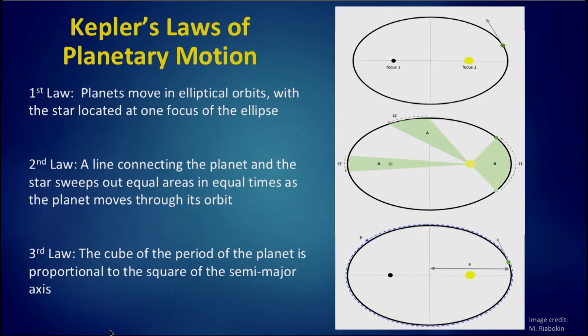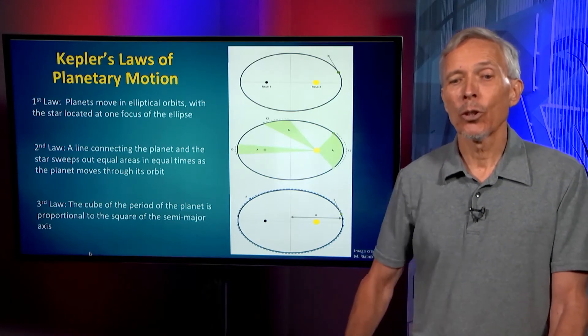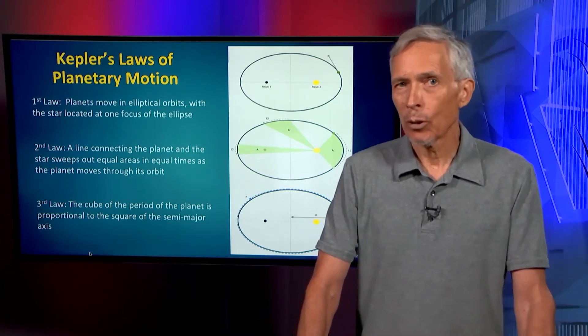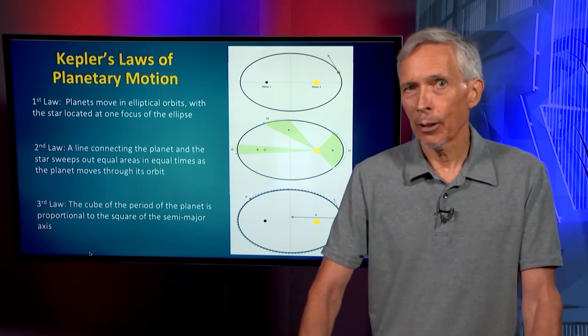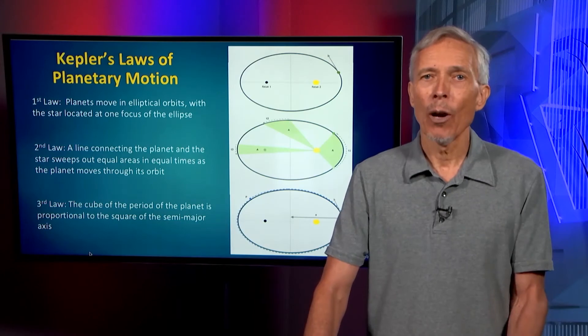Kepler's second law of planetary motion is that the line connecting a planet and the star sweeps out equal areas in equal times as the planet moves through its orbit. And the third law is a mathematical relationship between the period of the planet and the semi-major axis, or mean distance, of the planet from the star, such that the cube of the period of the planet is proportional to the square of the semi-major axis. This refers to the fact that the most distant planets in our solar system and all others are moving more slowly in their orbits and so have longer periods.